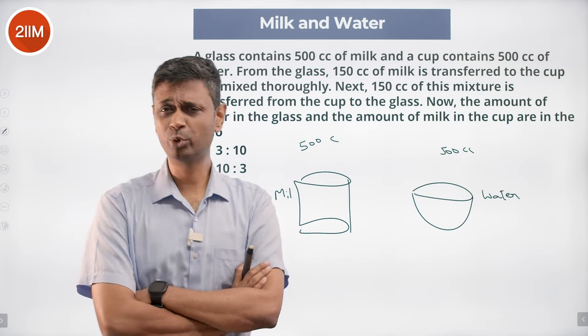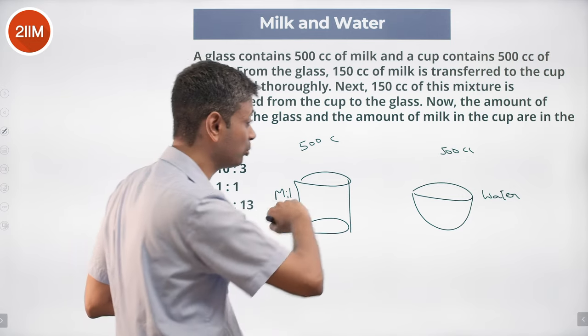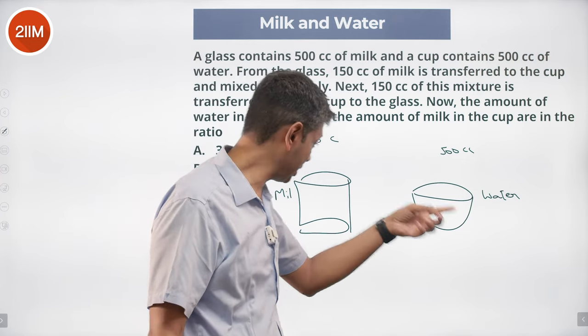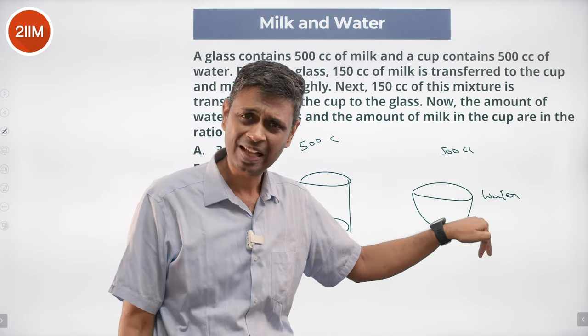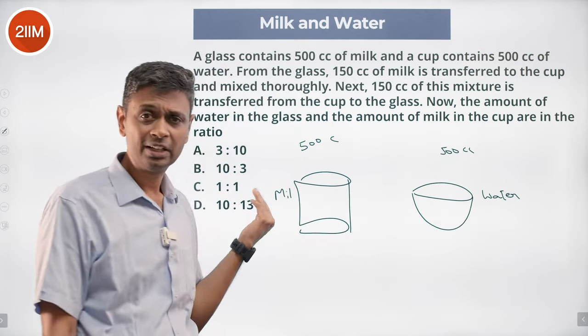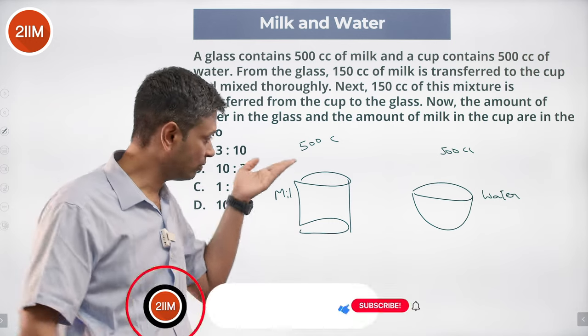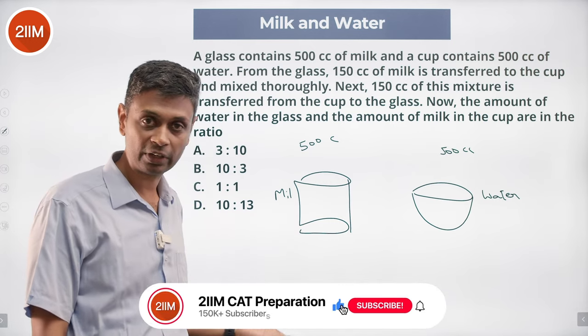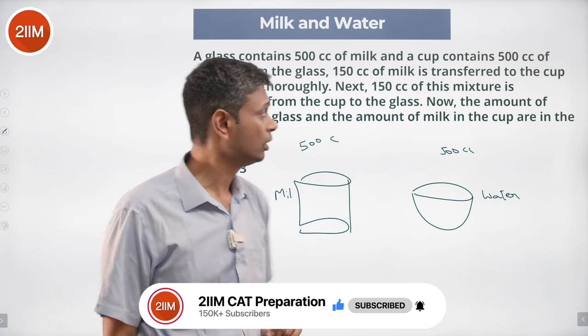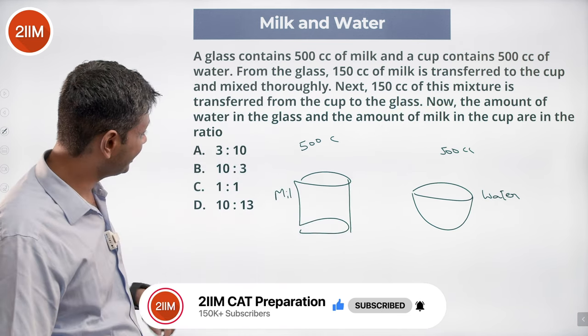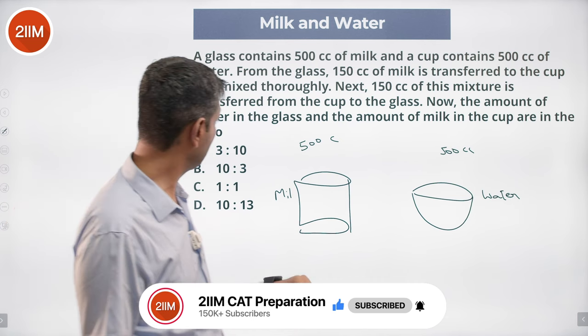So we take 150 ml and pour it into the cup. Once we pour it there, this becomes 650 ml. Then we take 150 ml from there and pour it back. It goes from 500 to 350 and back to 500. This goes from 500 to 650 and back to 500.